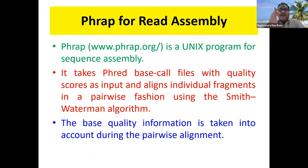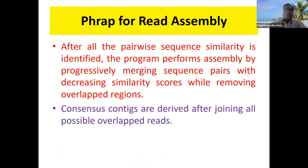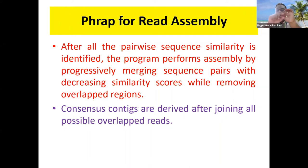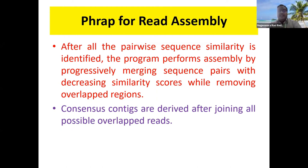PHRAP assembles all the good quality read files into contigs. The base quality information is taken into account during alignment. After alignment, the program performs assembly, then merges, and then removes the non-overlapping regions. Whatever overlapping regions are found are paired; those that don't pair are removed from the list, and then the contig is prepared.